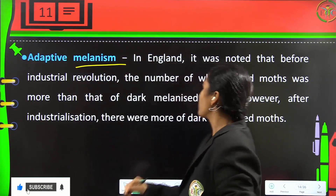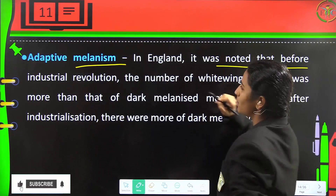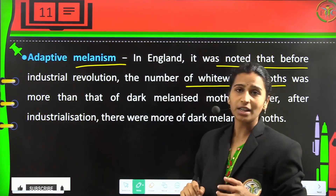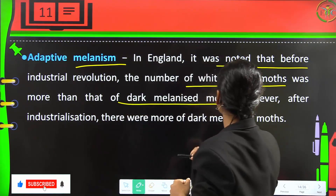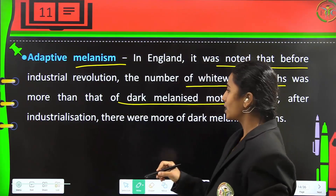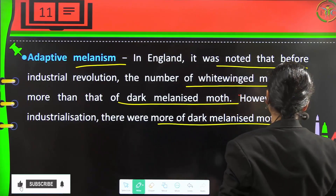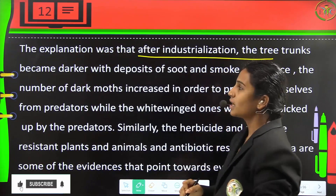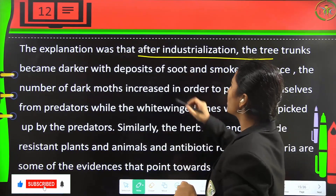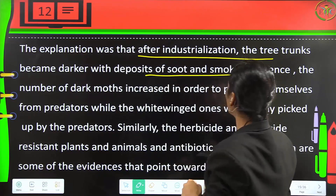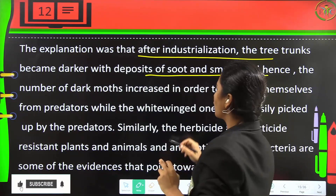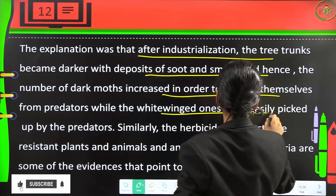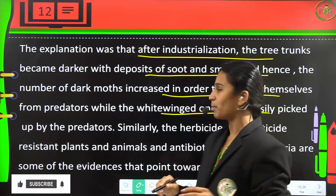Adaptive melanism: in England, before the industrial revolution, the number of white-winged moths was greater than that of dark melanised moths. However, after industrialization, there were more dark melanised moths. The explanation is that after industrialization, tree trunks became darker with soot and smoke, so the number of dark moths increased in order to protect themselves from predators, while white-winged ones were easily picked up by predators.